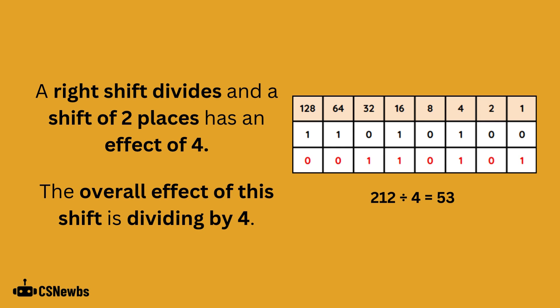A right shift divides and a shift of two places has an effect of 4. Therefore, the overall effect of this shift is dividing by 4. 212 has been divided by 4 to make 53.